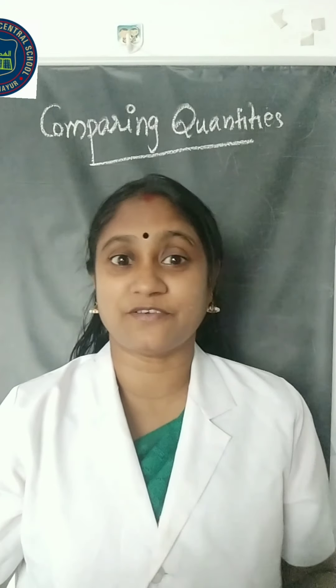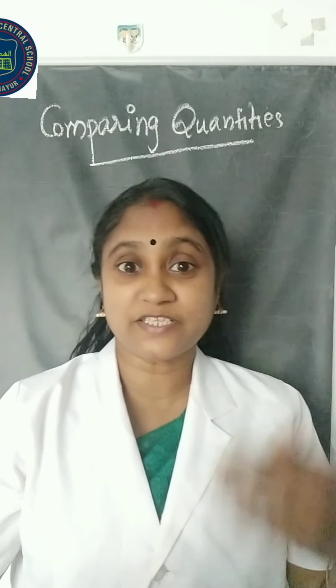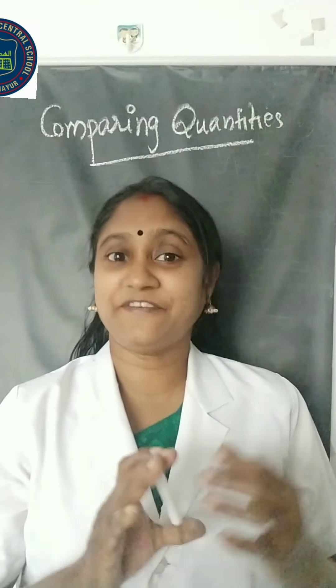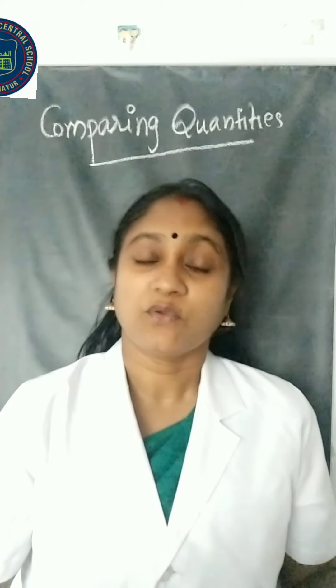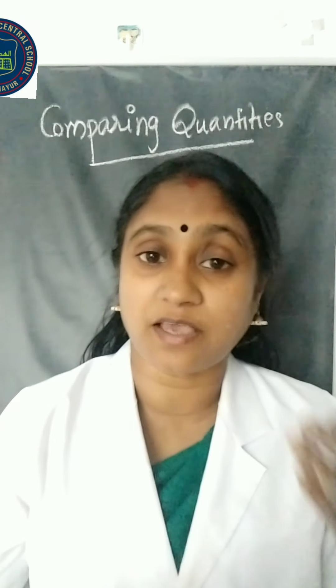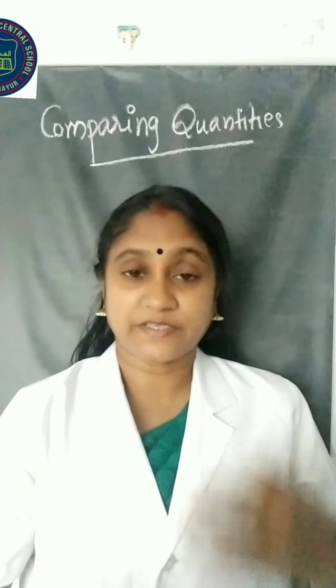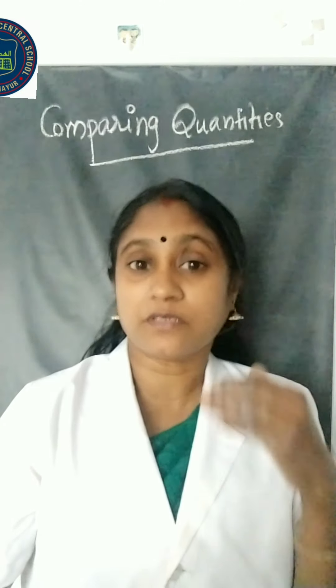If you are going to compare the heights of two persons, the units must be in centimeters. And if you are going to compare weight, it must be in kilograms. Two ratios can be compared by converting them into like fractions. If those fractions are equal, we can say that the two ratios are in equivalent form. We convert them into like fractions and then check whether they are equivalent or not.